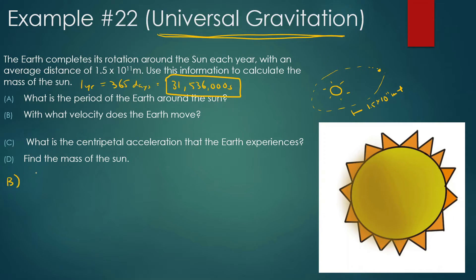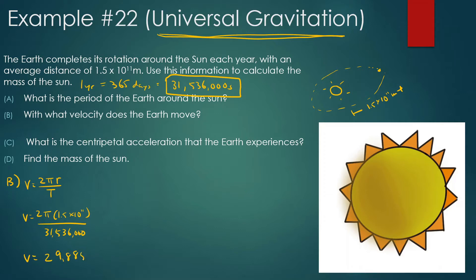Part B: With what velocity does the Earth move? We know velocity is equal to 2πr divided by T. The radius is 1.5 times 10 to the 11 meters, divided by the period of 31,536,000 seconds. That gives us a velocity of 29,885.8 meters per second. That's actually around how fast the Earth is going around the Sun — you can look it up.